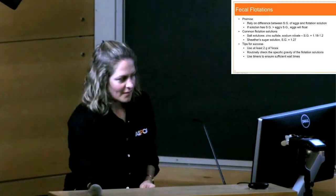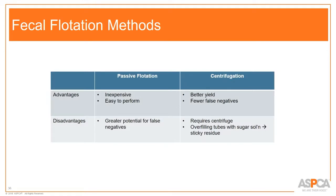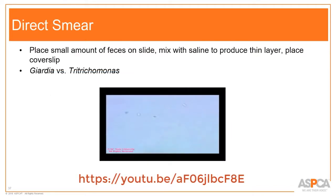Comparing fecal flotation methods: centrifugation versus passive. Centrifugation tends to give better yield — not that samples have more parasites, but you're more likely to recover eggs and get true positives, with fewer false negatives. You do need a centrifuge for that. If you can't do centrifugation, just realize you may be missing some positives with passive flotation.